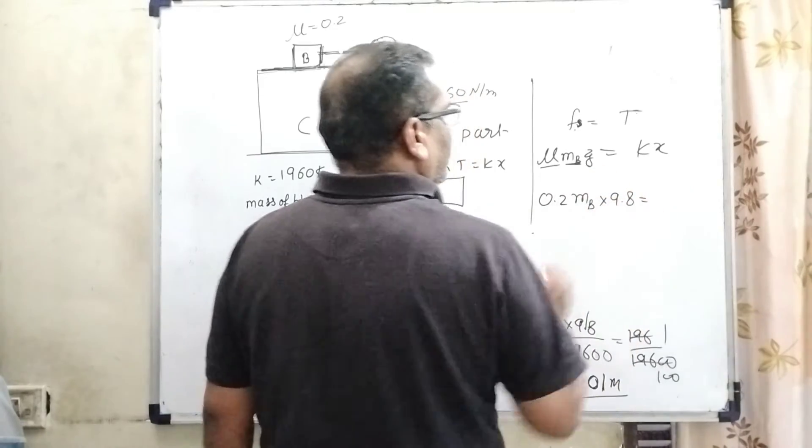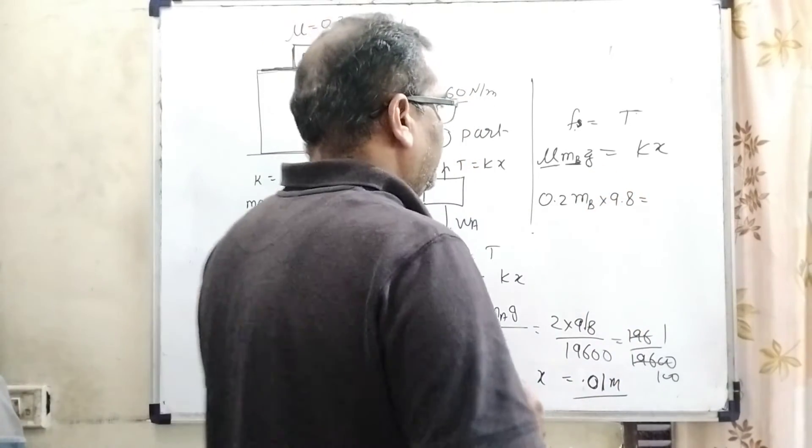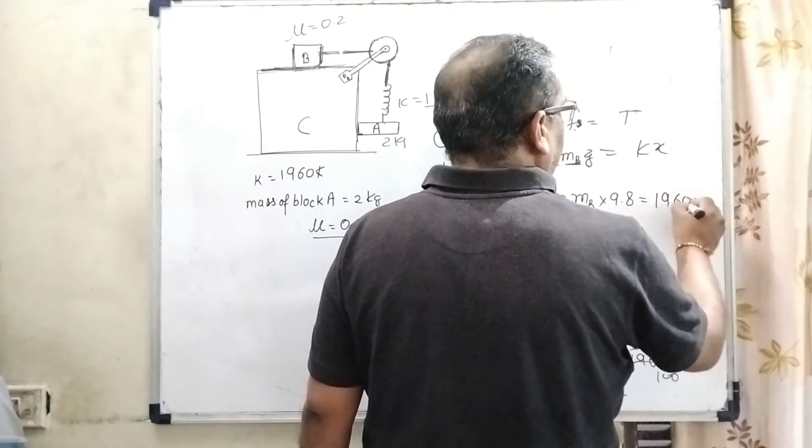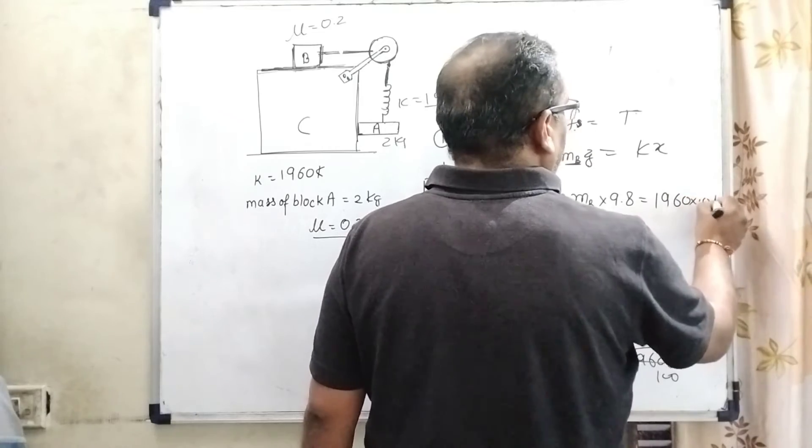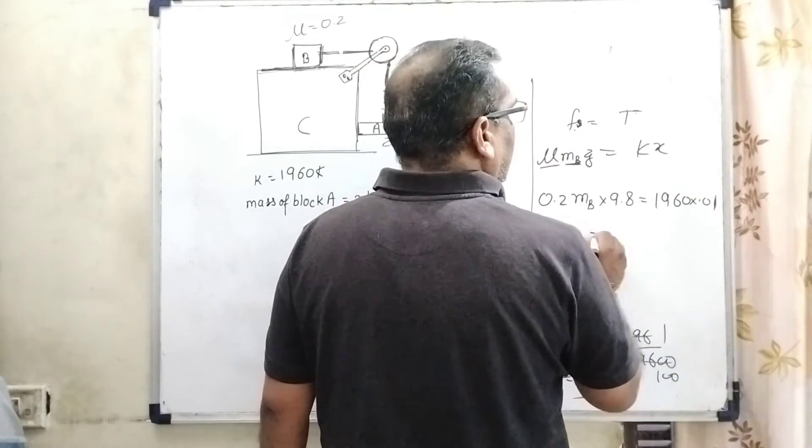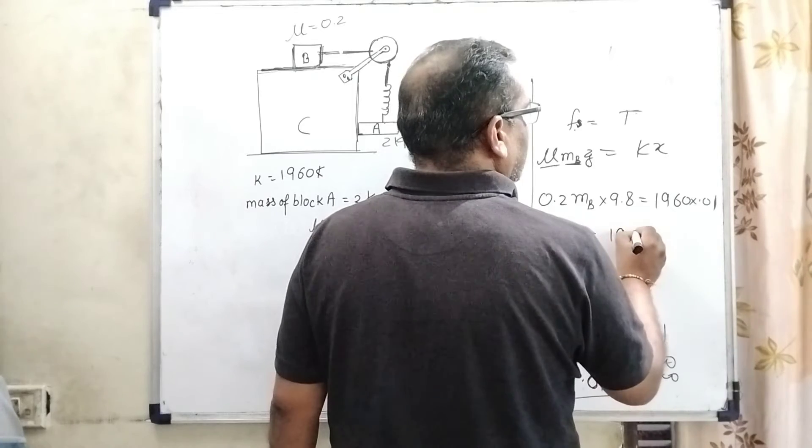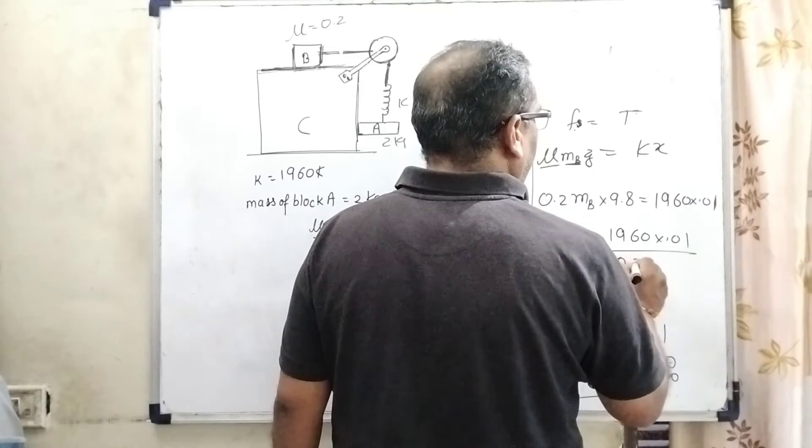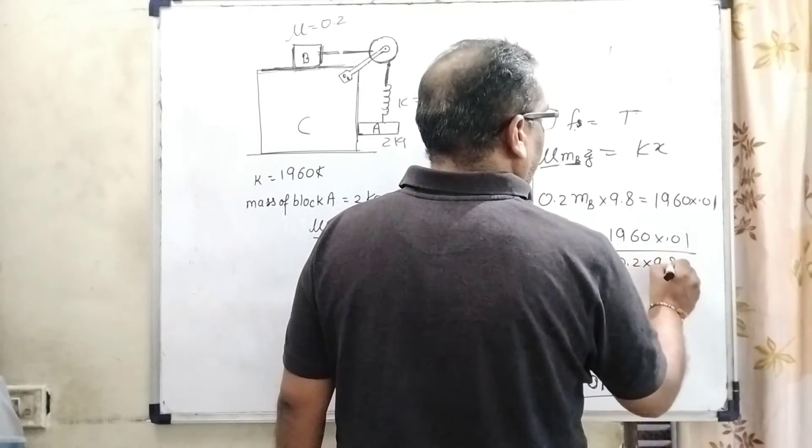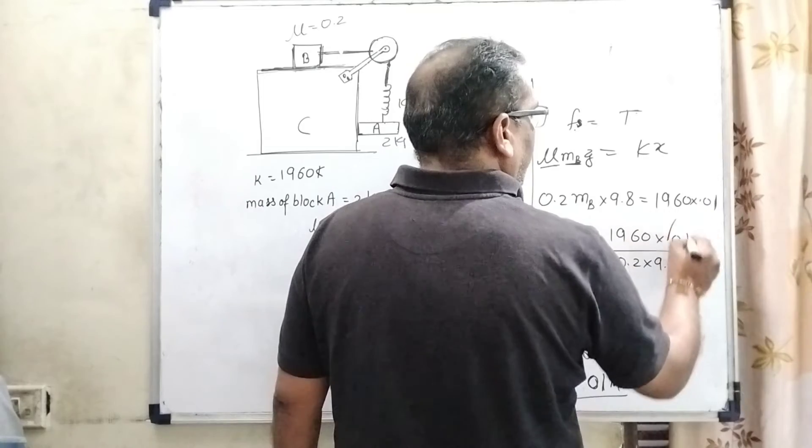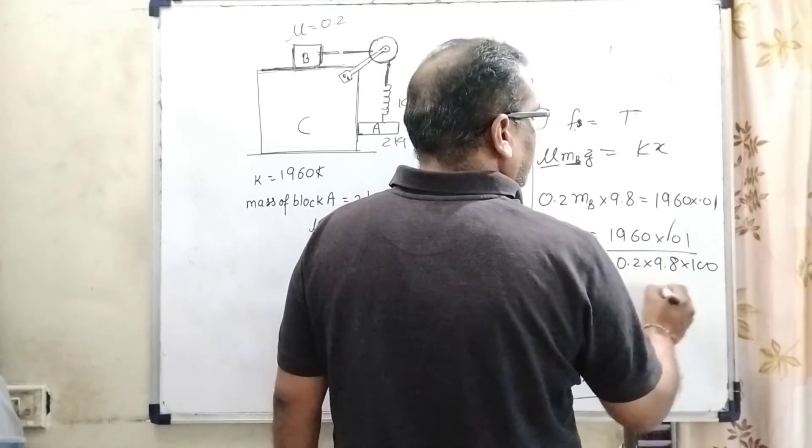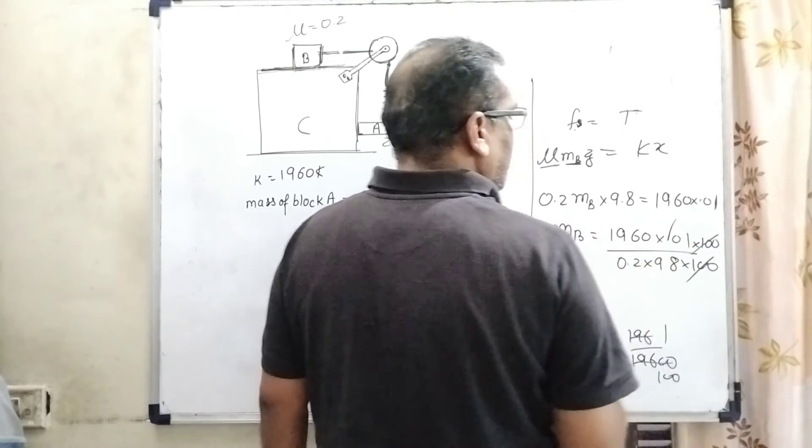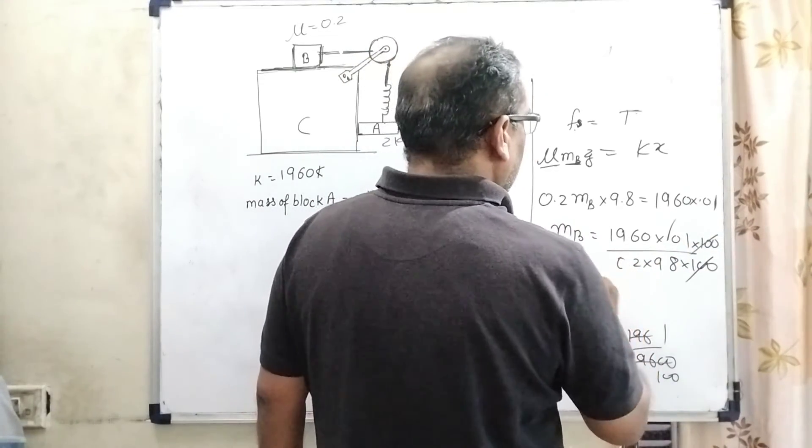So therefore mB equals 1960 times 0.01 divided by 0.2 times 9.8. We know this 0.01 and 0.2 cancel out, so mB we get 10 kilograms.